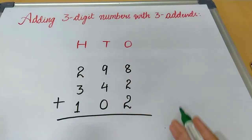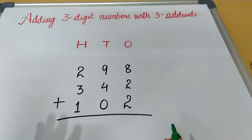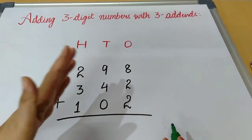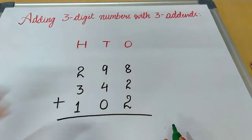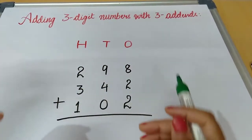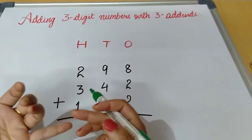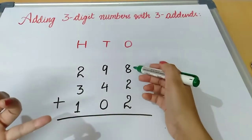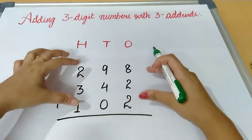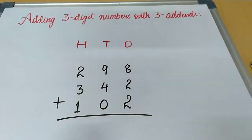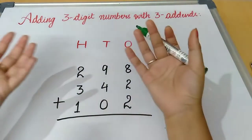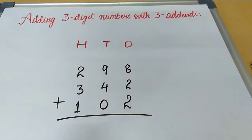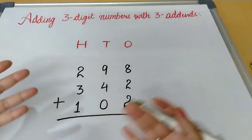Dear students, now we are going to learn adding three-digit numbers with three addends. In our previous videos we learned how to add two-digit numbers with three addends — these are called addends. Now we will add three-digit numbers, using the same simple concept which we use in addition.